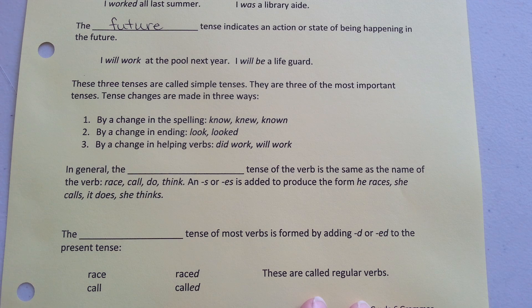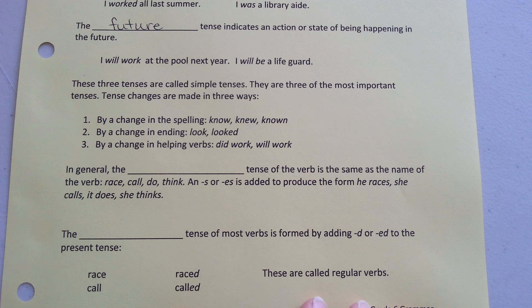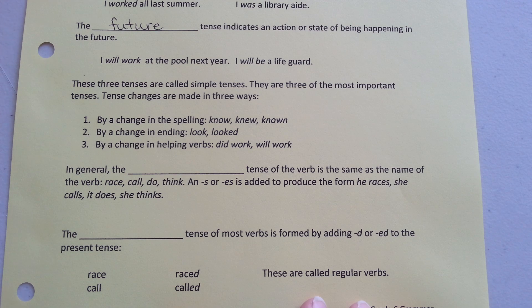Tense changes are made in three ways. Number one, by a change in their spelling — so, knew, and known. By a change in the ending — from look to looked. By a change in helping verbs — did work, will work.